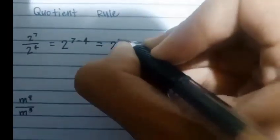Quotient rule. Like the product rule, they're similar, but here we subtract them. Copy the base, which is 2. 7 minus 4 equals 3. Copy the base and the 3, 2 to the 3rd.